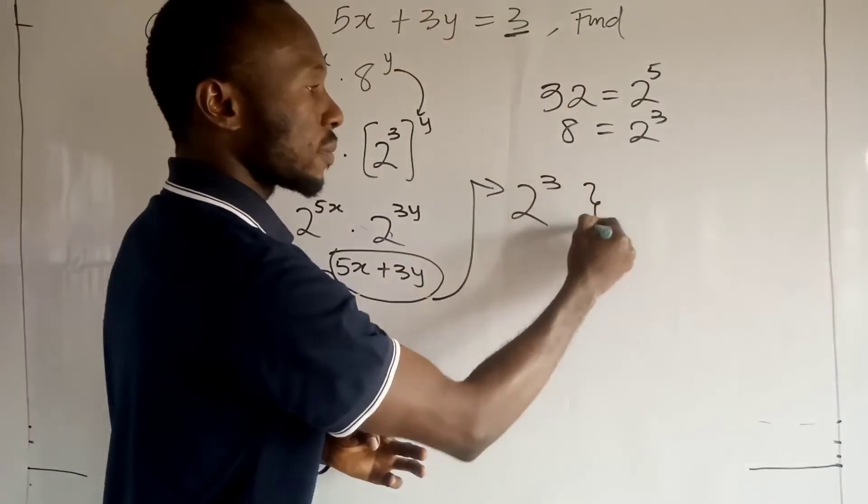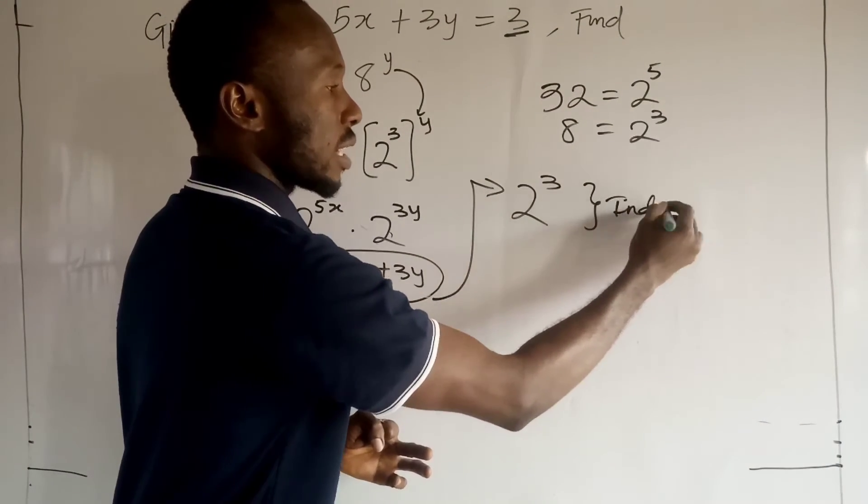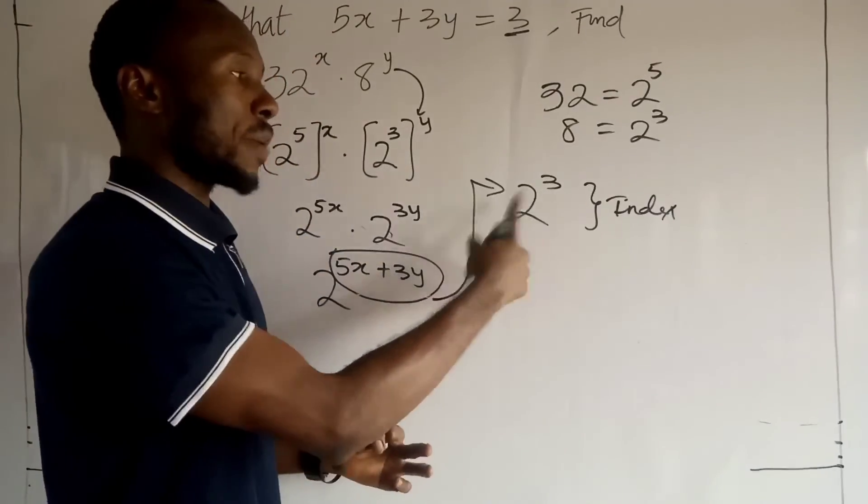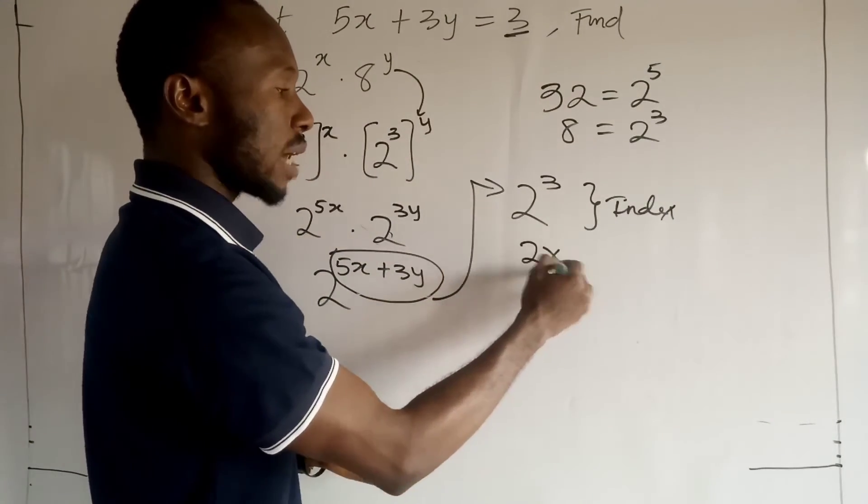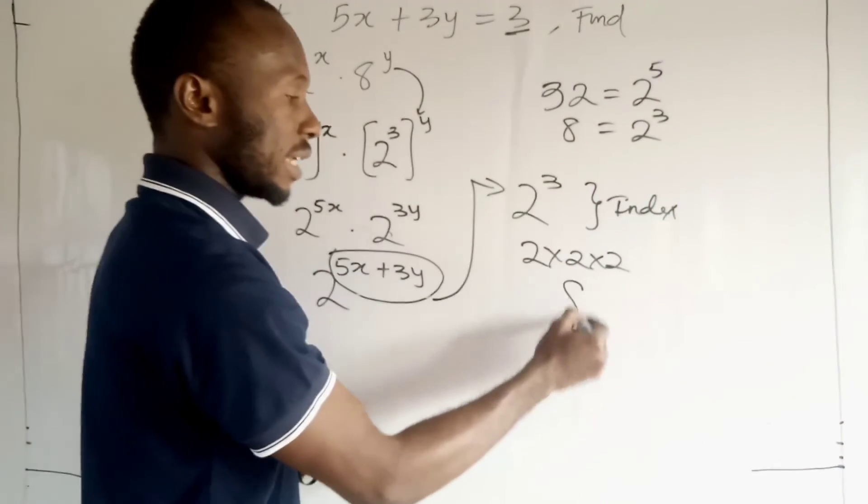And remember, this is the index form. This guy is called the index form. So, if you want to expand this stuff, it's going to become 2 times 2 times 2, which is just 8.